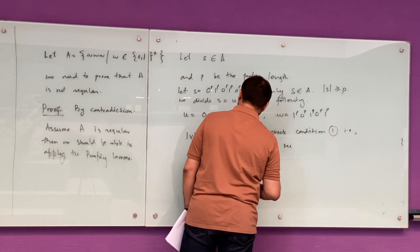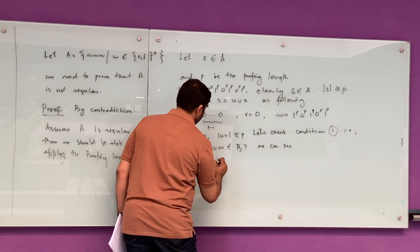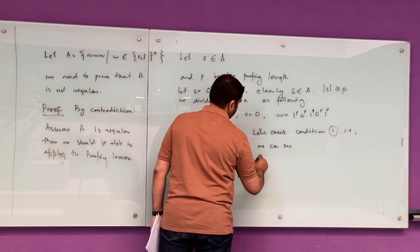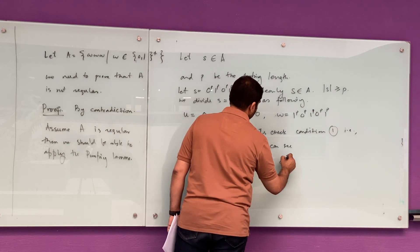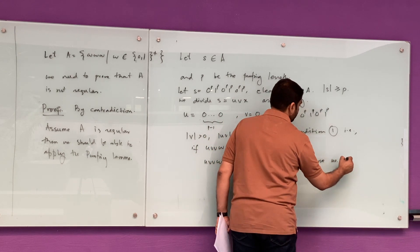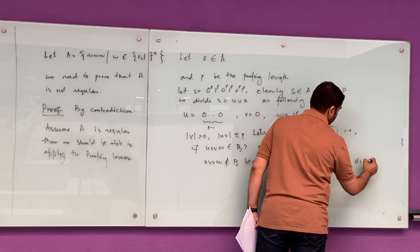So we can check if condition number one also applies. That is, we can pump a string in S. If UVW belongs to A, then UVVW should also belong to A.